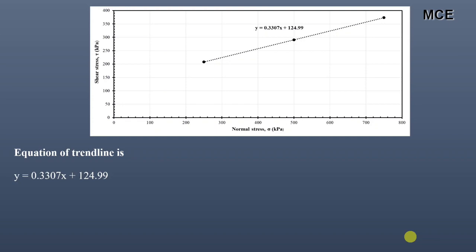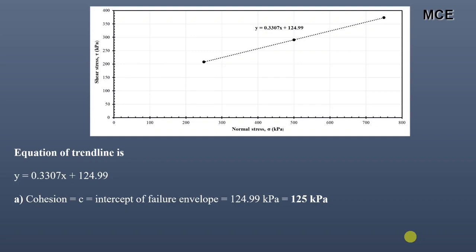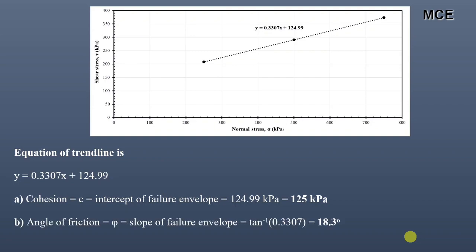Cohesion c is simply equal to the intercept of the failure envelope, which is 124.99 kilopascal, approximately equal to 125 kilopascal. The angle of friction phi is equal to the arctangent of the slope of the failure envelope.